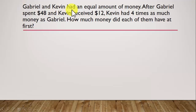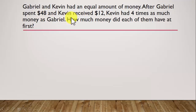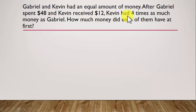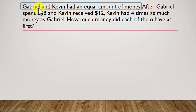Gabriel and Kevin had an equal amount of money. So, when they begin at the start, the quantities of money with Gabriel and Kevin are equal. After Gabriel spent $48 and Kevin received $12. We see that Gabriel is spending $48, which means he is losing $48 or giving away $48. Kevin is receiving $12. Then, Kevin had 4 times as much money as Gabriel. How much money did each of them have at first? So, first, we are starting with equal.